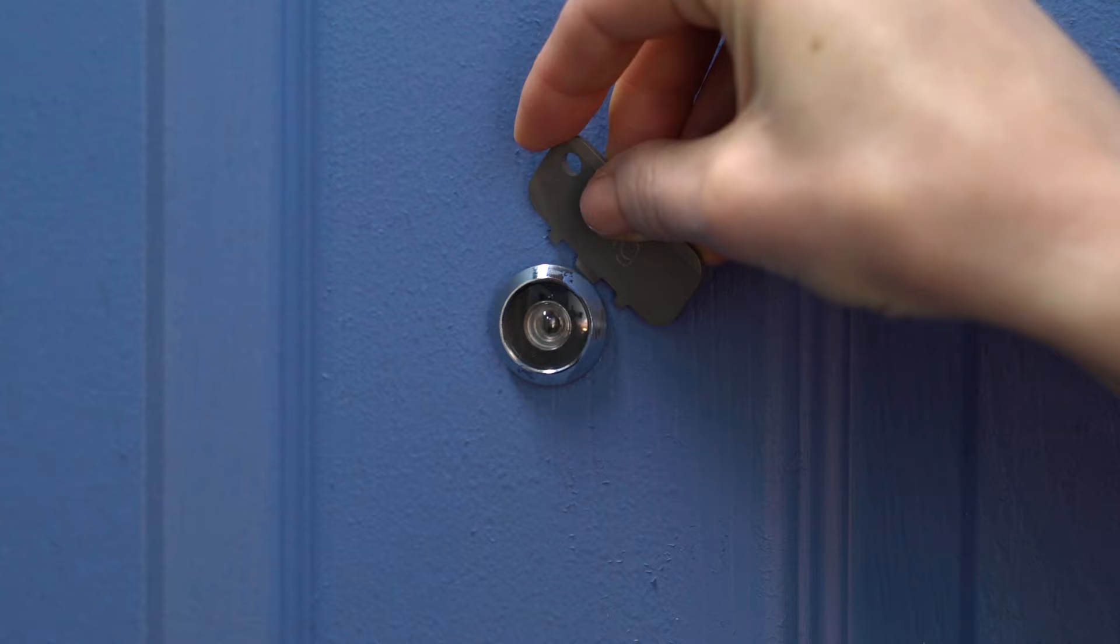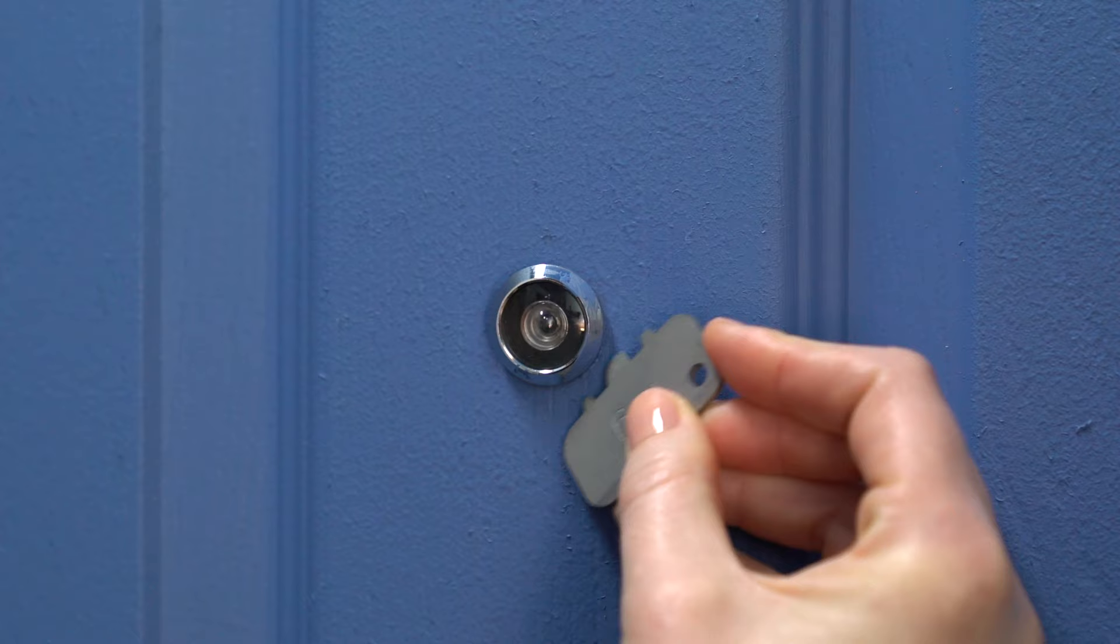Now, let's grab the included peephole key and check if there's paint covering either side of your peephole, which could make it hard to unscrew. If so, use the toothed edge of the peephole key to remove any paint covering the edges of your lens or the rear of the viewer.